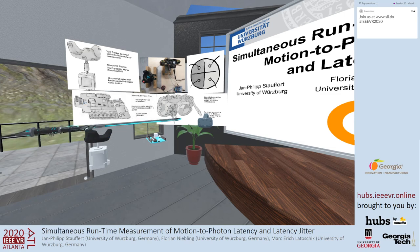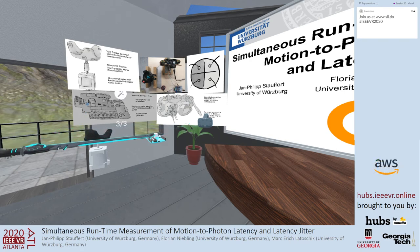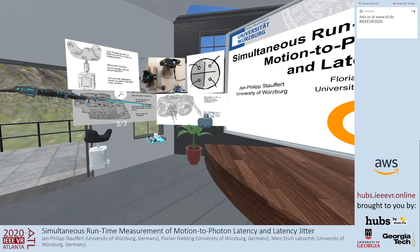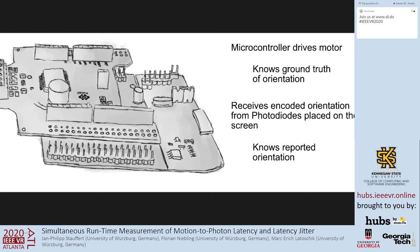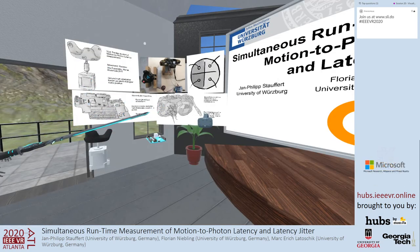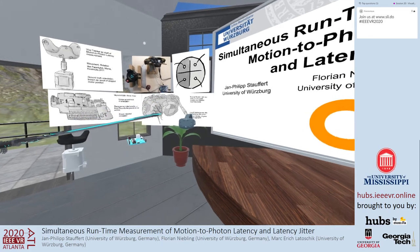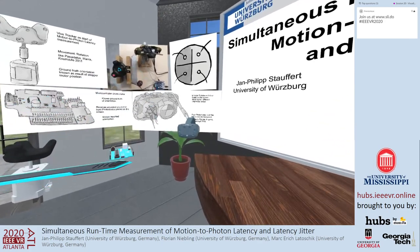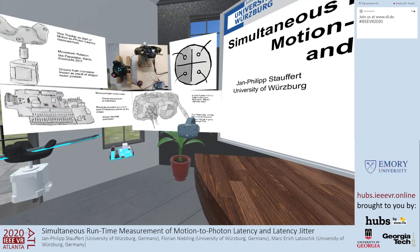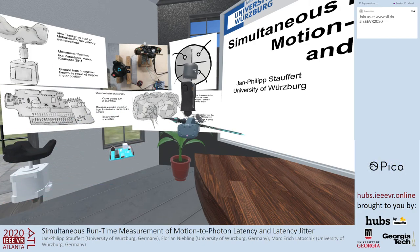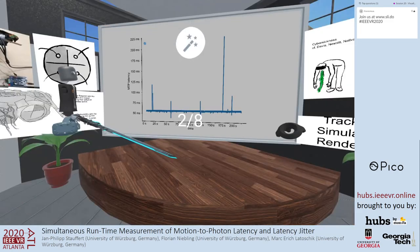The microcontroller now knows the ground truth of the stepper motor and therefore of the Vive tracker. It can read the photodiodes to see what the system reports, and then calculate the difference between the real motion and the reported motion. Our approach is not the first to use a tracked object rotating with photodiodes on a screen, but what makes our approach unique is the selection of those different parts. Let's see what we can measure with that setup.